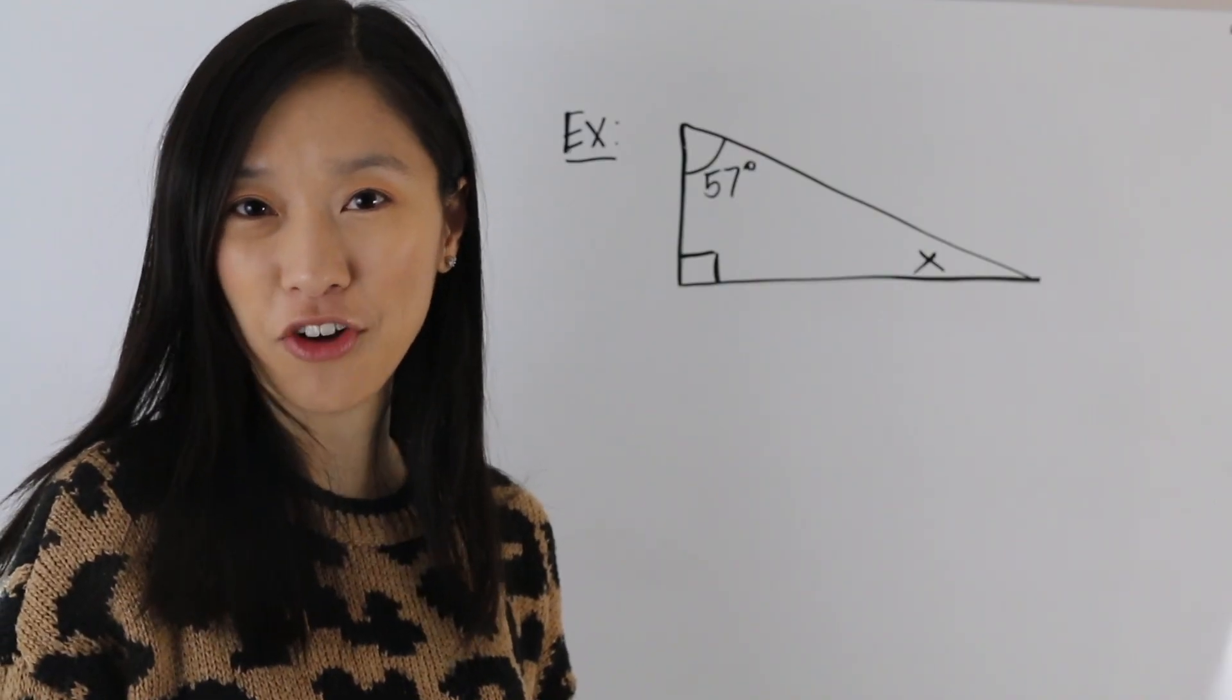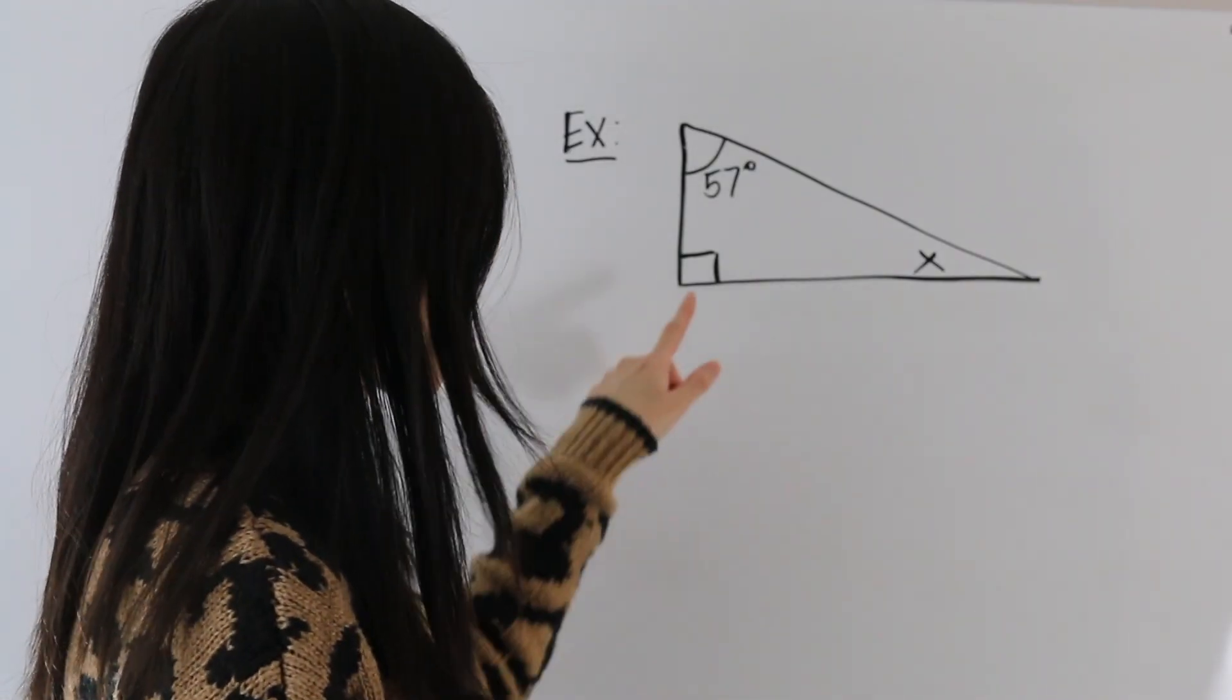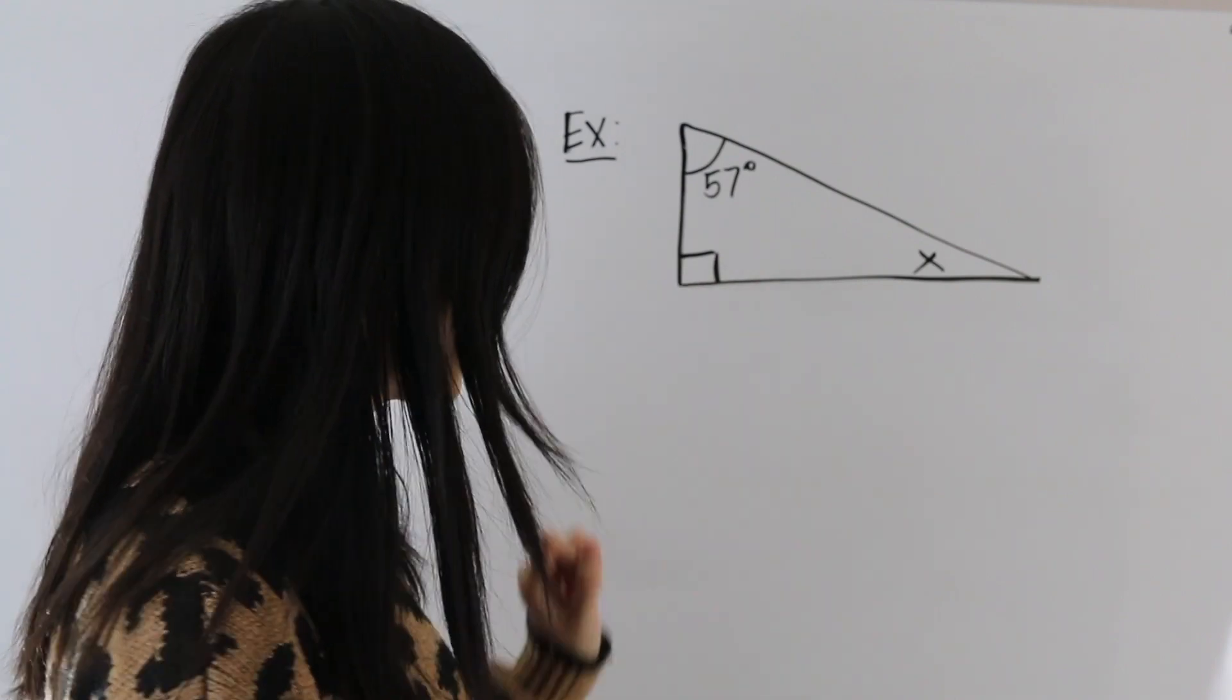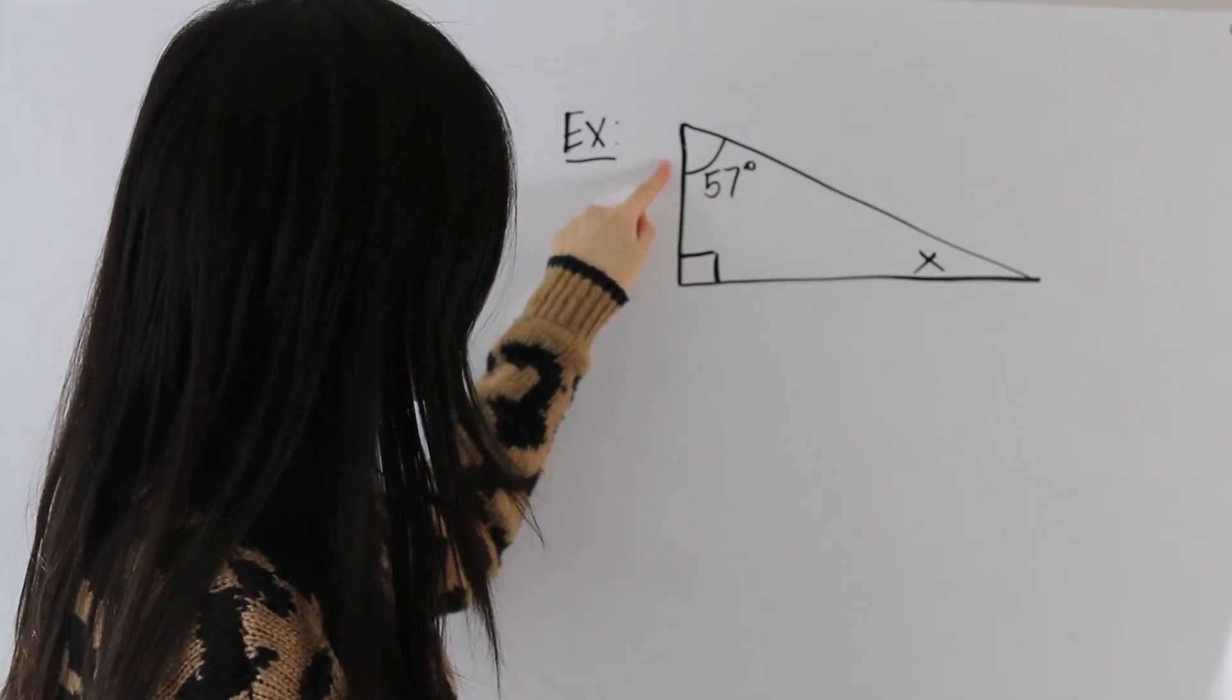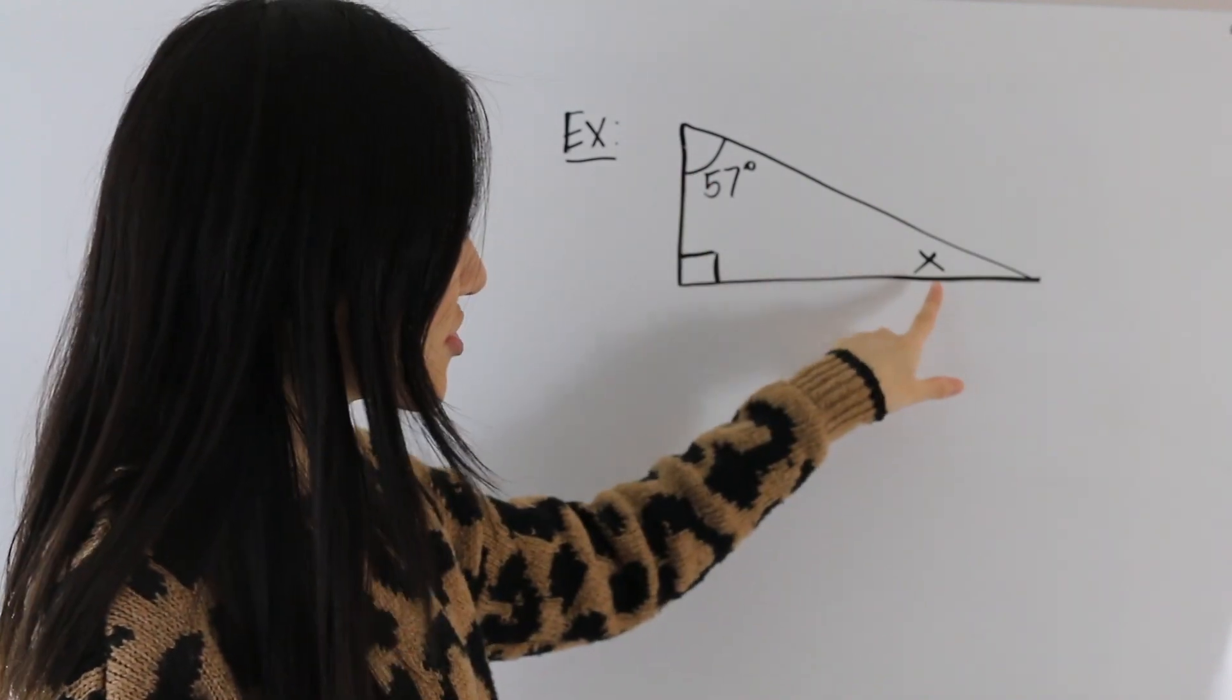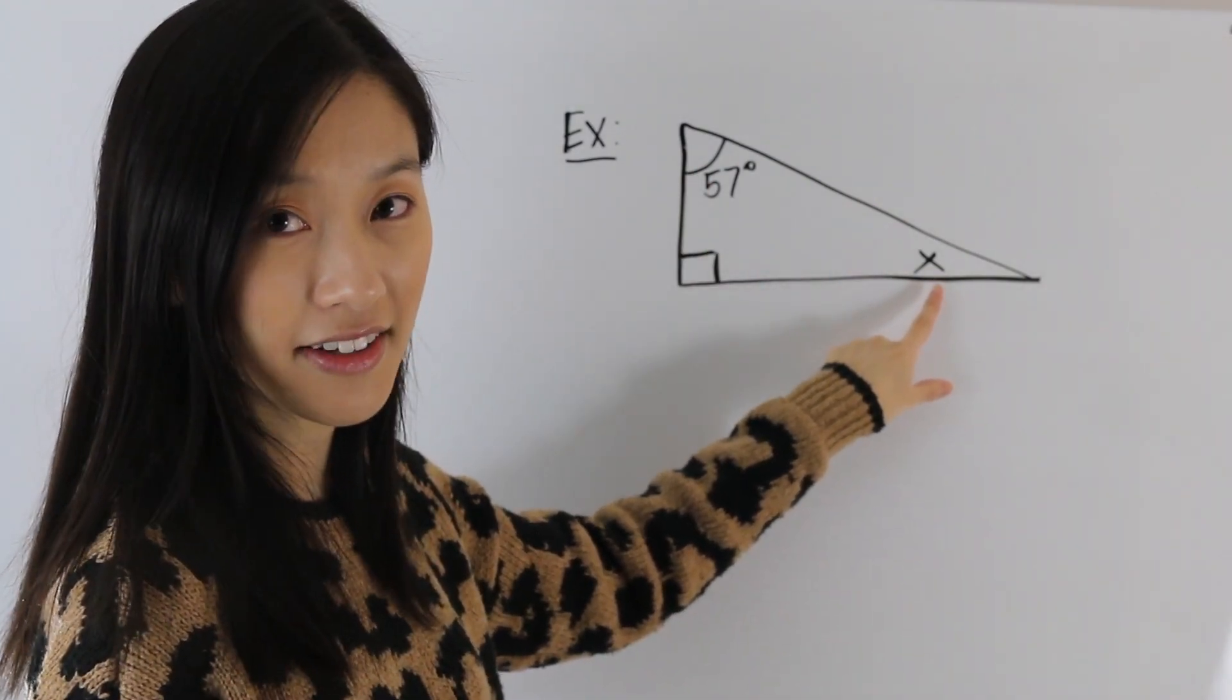In this problem here, we have a triangle, and we know that's a right triangle because of this symbol here, which means 90 degrees. And then we have this angle, which is 57 degrees, and we are asked to solve for this angle denoted by the letter X.